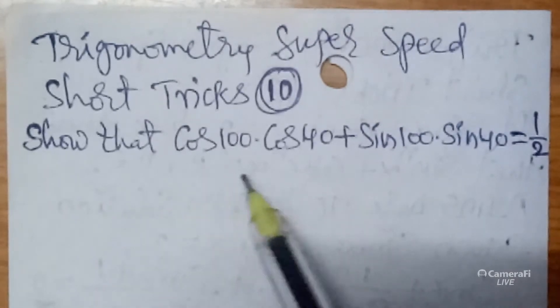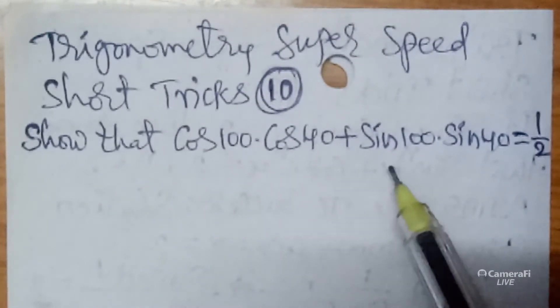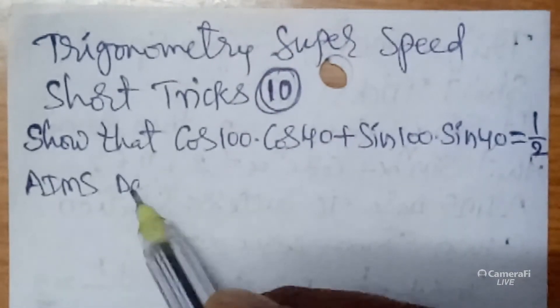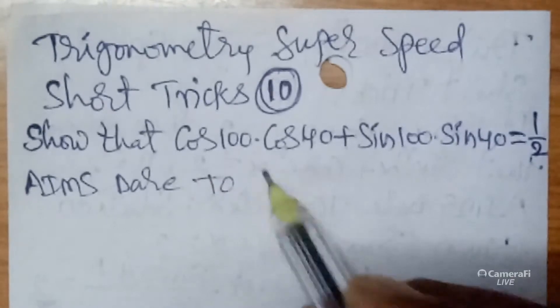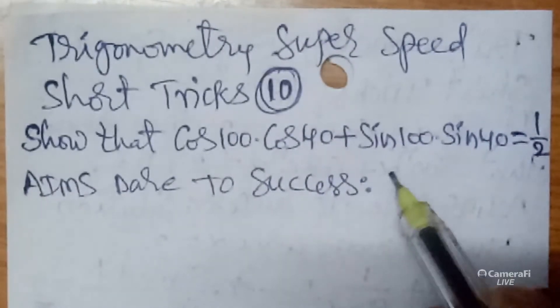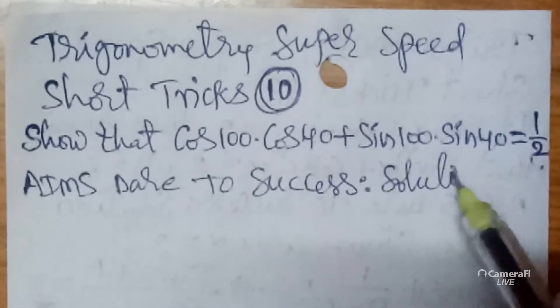So the question is cos 100 cos 40 plus sin 100 sin 40. Now I wanted to explain you AIM's Dare to Success solution.